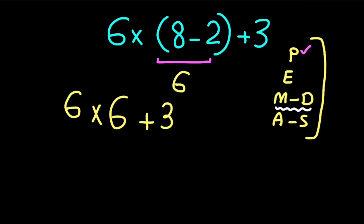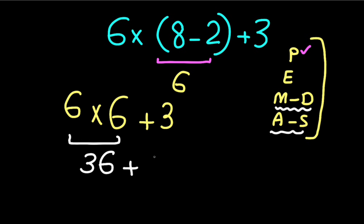According to PEMDAS, multiplication and division have higher priority than addition and subtraction, so we solve the multiplication first. 6 times 6 gives us 36, and 36 plus 3 equals 39.